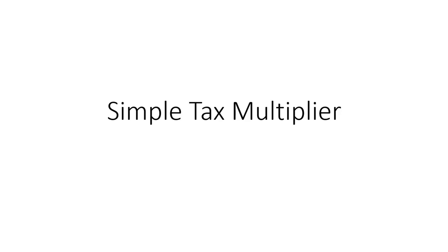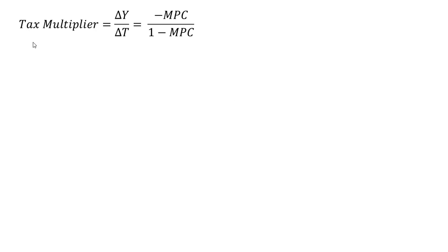Hello. In this video, we're going to do a bunch of simple tax multiplier problems. The tax multiplier is given as the change in income, or change in output, or change in real GDP — all the same thing — divided by the change in taxes. And this will equal minus the marginal propensity to consume divided by 1 minus the marginal propensity to consume.